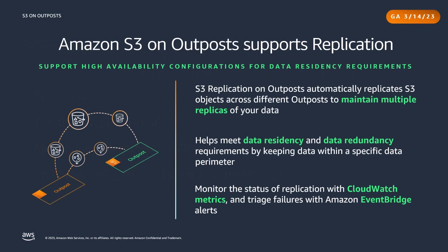S3 replication on Outpost is a new feature of Amazon S3 on Outpost. This extends S3's fully managed approach to replication to Outpost buckets, helping customers meet their data residency and data redundancy requirements. With local replication on Outpost, you can create and configure replication rules to automatically replicate your S3 objects to another Outpost or to another bucket on the same Outpost. During replication, S3 on Outpost objects are always sent over the customer's local gateway, LGW, and objects do not travel back to the AWS region.